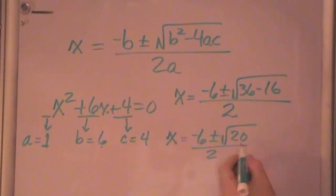So x equals minus 6 plus or minus 2 root 5, all over 2, and now our 2 can cancel out into here, and we end up with x equal to minus 3 plus or minus the square root of 5.